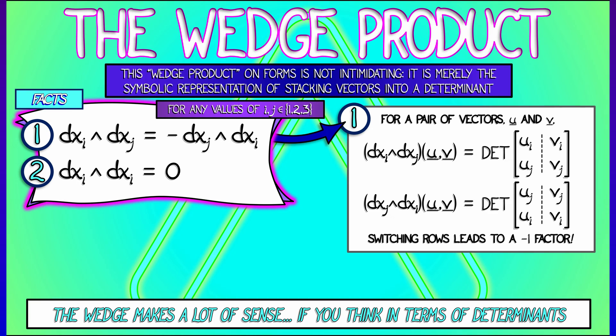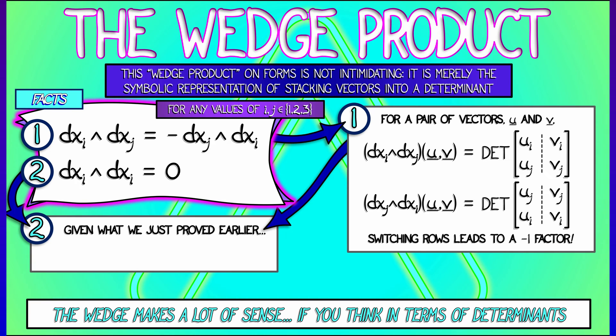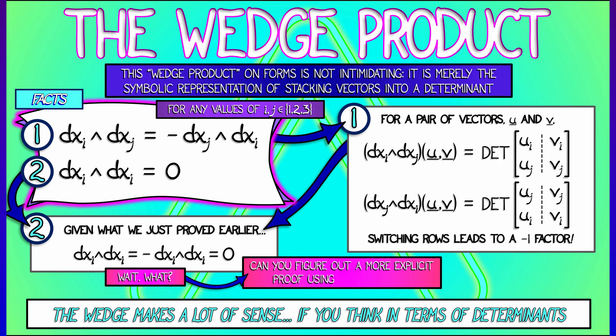Can we think about why wedging a basis one form with itself gives 0? Well given what we just proved, dxi wedge dxi is really equal to minus dxi wedge dxi and therefore must be 0. I reversed the two things and I used anti-commutativity. Maybe you can come up with a better proof using determinants.